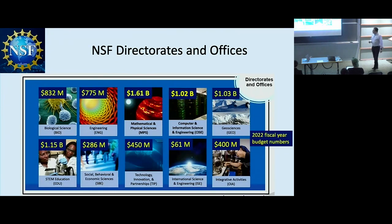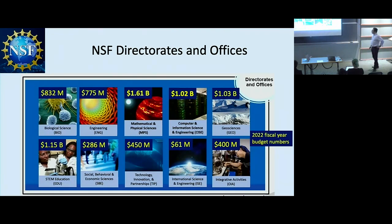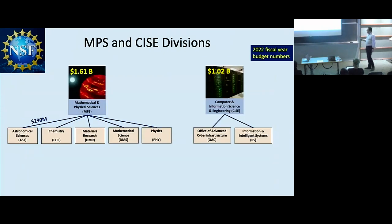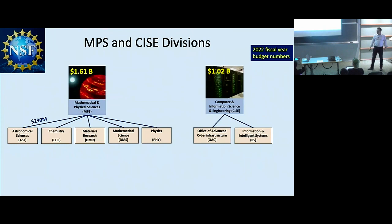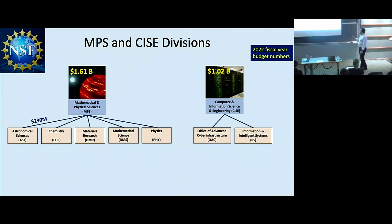Looking at the budgets for last year: mathematical and physical sciences is the biggest unit at $1.61 billion, and the computer science directorate had a little over a billion dollars. Mathematical and physical sciences has five divisions — astronomy, chemistry, materials, math, and physics. The astronomy budget is about $290 million. The MPS directorate also has money outside those five divisions for interdisciplinary work, and that affects some of what I'll tell you.